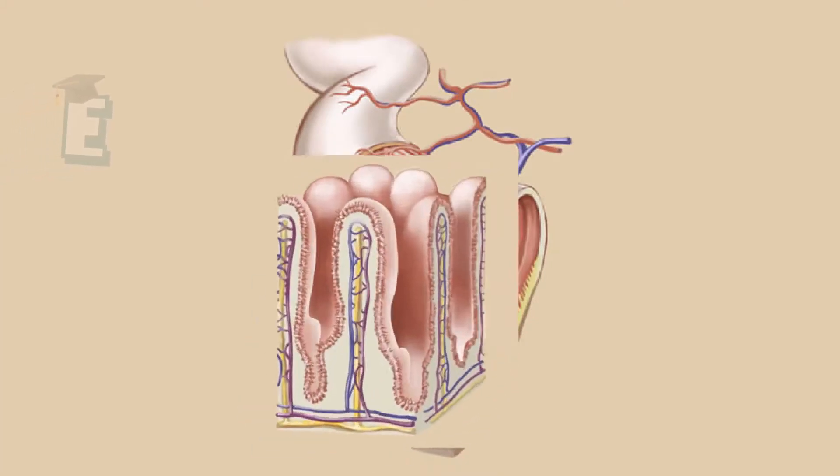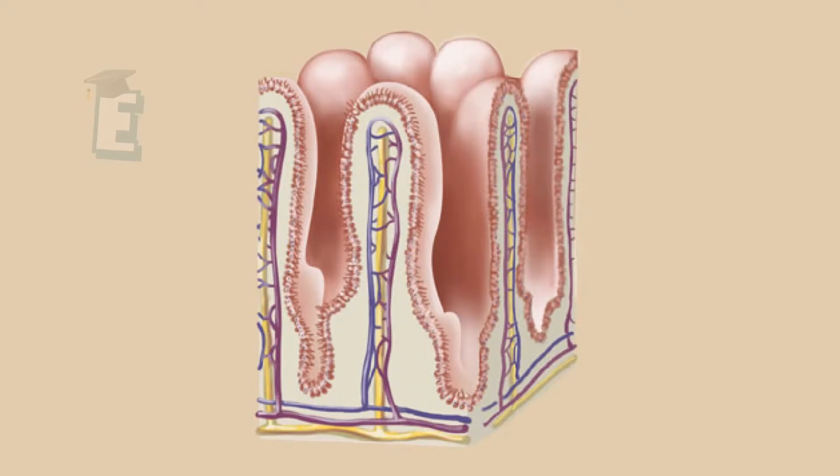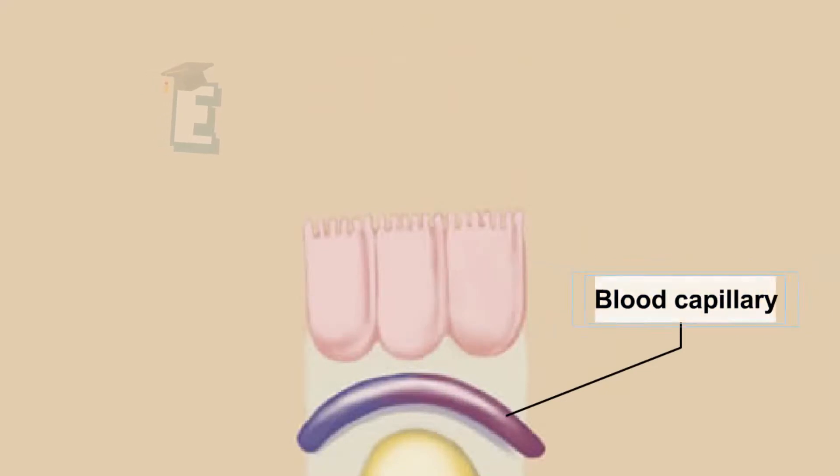The inner wall of the small intestine has large circular folds with numerous small finger-like projections called villi. The nutrient absorption happens in those places by simple diffusion.